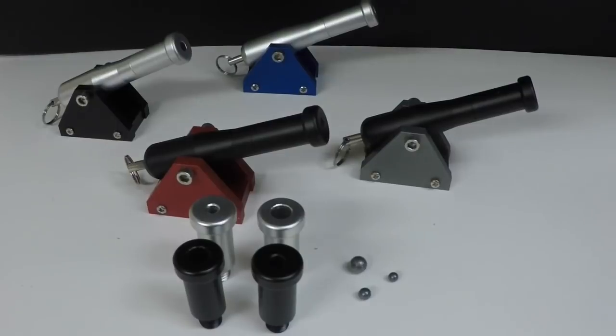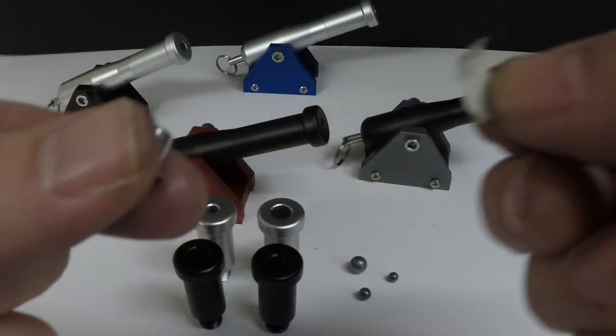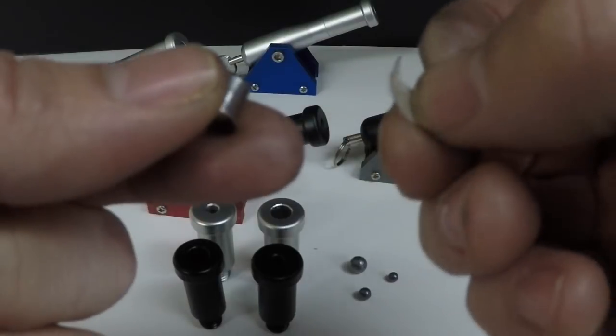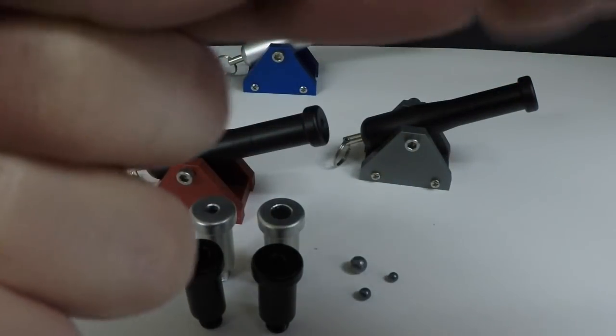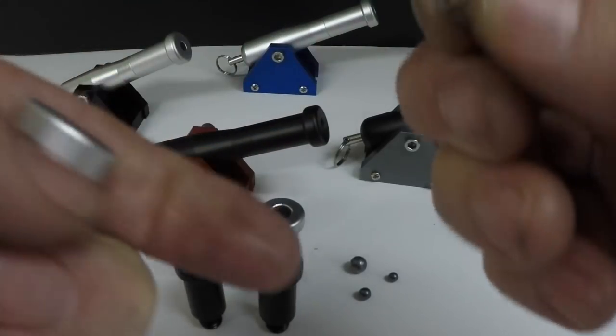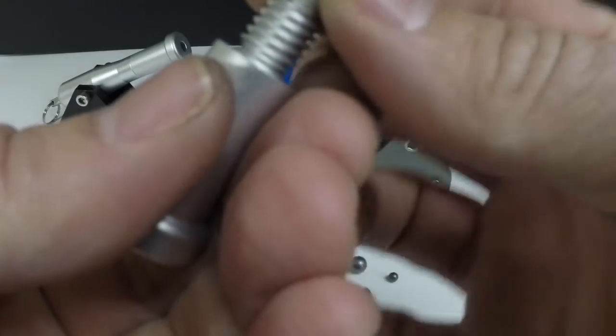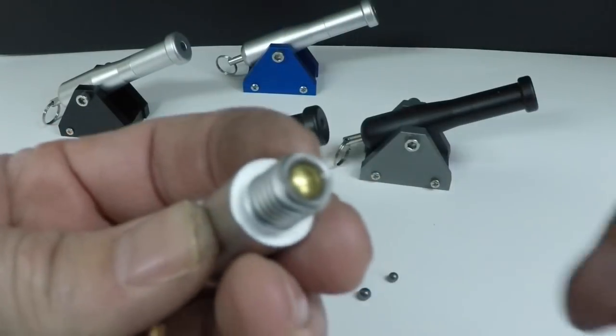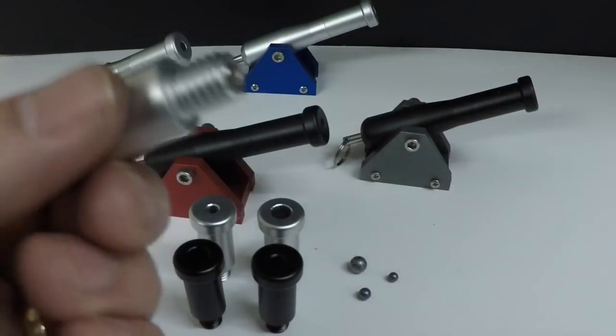I like to take the 209 primer. Here's a 209 primer. And I like to get a little piece of masking tape, and I will put this masking tape just around the outside of that primer. It's very simple to do. And I'll just drop it right in the end of this, like so. It won't fall out when you tilt the barrel back and do some elevation.